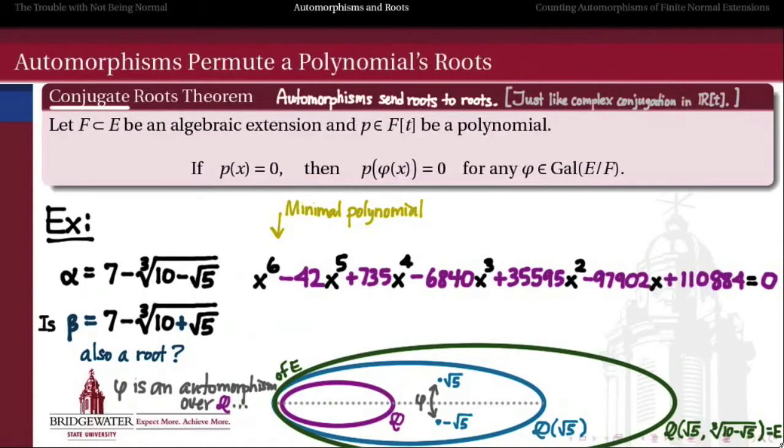But if phi is an automorphism of Q adjoined radical 5, which is a subfield of E, then it also extends to an automorphism of E itself. So we're going to think of phi as not being an automorphism that just trades the square root of 5 for the minus the square root of 5. But it actually is an automorphism of this whole extended field that happens to do just that. And so this realizes beta as the image under an automorphism over Q of alpha.